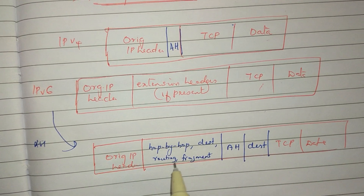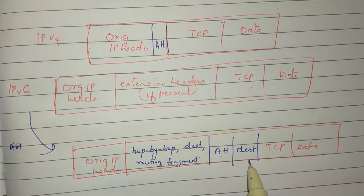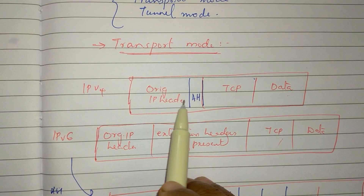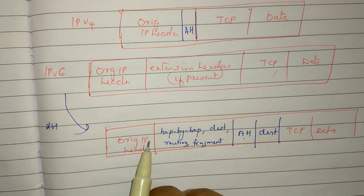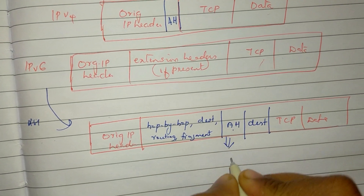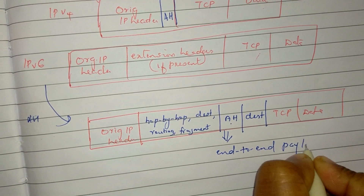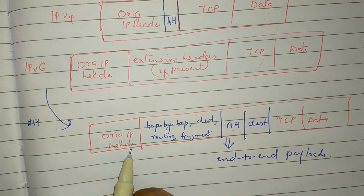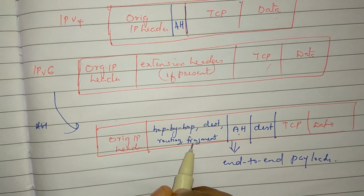For IPv6, the headers include destination, routing, fragment, then authentication header, then destination. In AH transport mode we use IPv4 and IPv6 with end-to-end payload. AH appears after the IPv6 base header and the hop-by-hop, routing, and fragment extension headers.